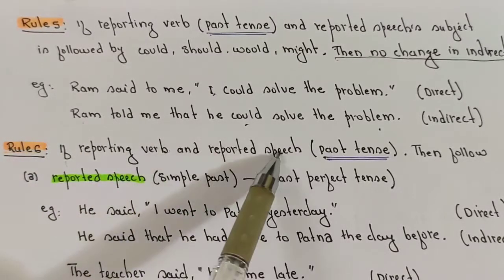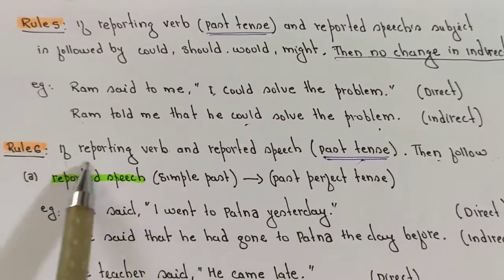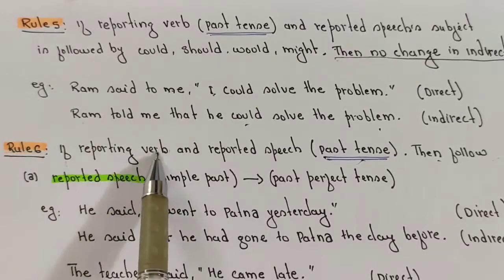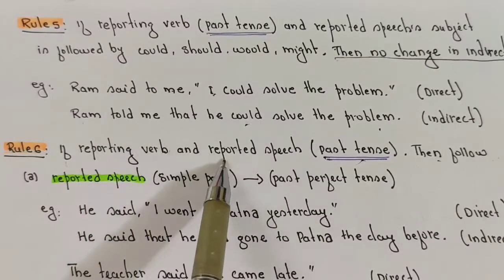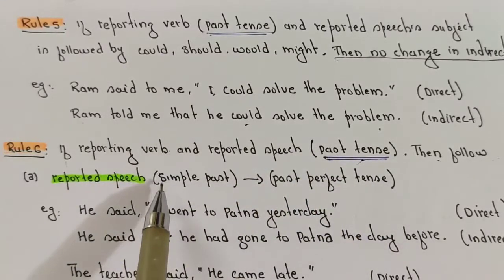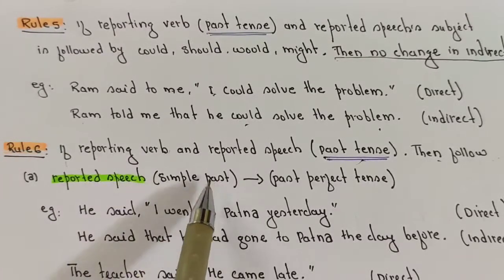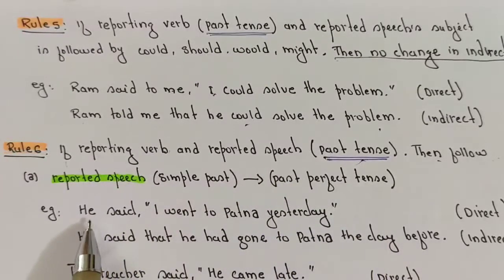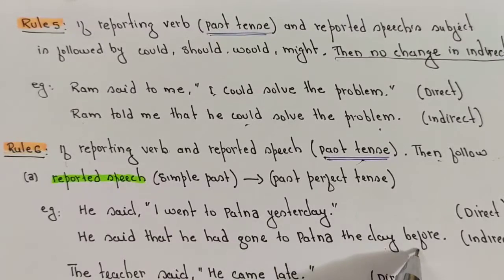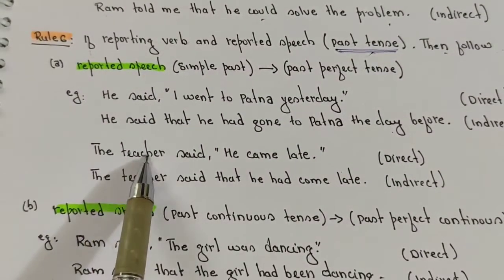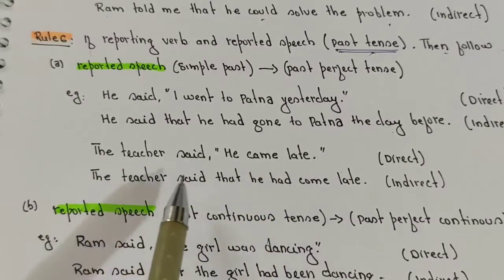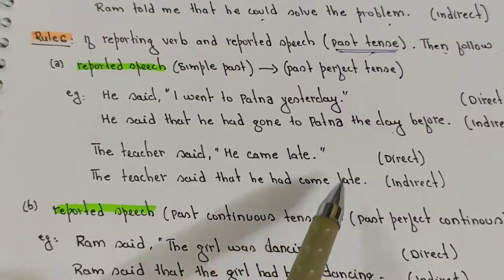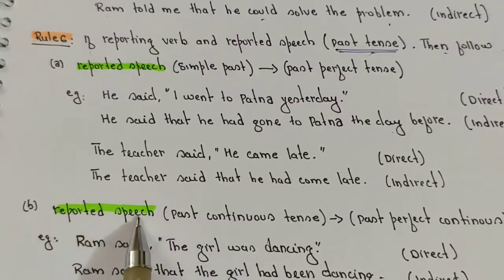Rule number six: if the reporting verb and reported speech are both in past tense, follow these three conditions. First, if the reported speech is in simple past tense, it changes into past perfect. Example: 'He said, I went to Patna yesterday' becomes 'He said that he had gone to Patna the day before.' Another: 'The teacher said he came late' becomes 'The teacher said that he had come late.'